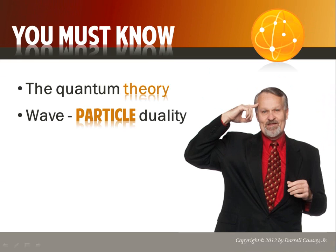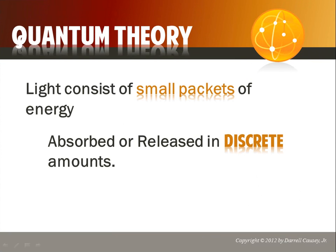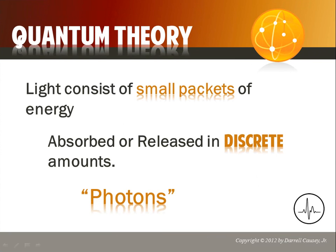You must know the quantum theory, wave-particle duality, and the planetary model. If you don't have these down, you need to go and catch my other videos and make sure you understand wave-particle duality. You need to be sure you understand Bohr's model, the quantum theory, and the photoelectric effect explained by Einstein. The quantum theory states that light is made up of small particles called photons, released in discrete amounts — basically little packets of whole energy with no fractions.